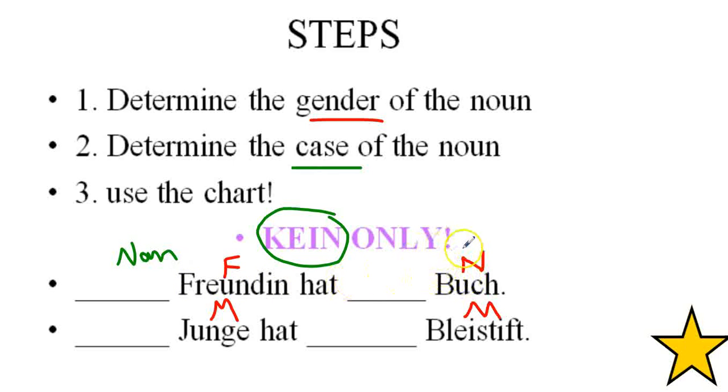Has no book, this is direct object, so this would be accusative case. Let's take a look at this other sentence determining the case. The boy, the no boy has no pencil. Once again sounds silly, but just practice with me. So subject for boy, pencil is the direct object or accusative.